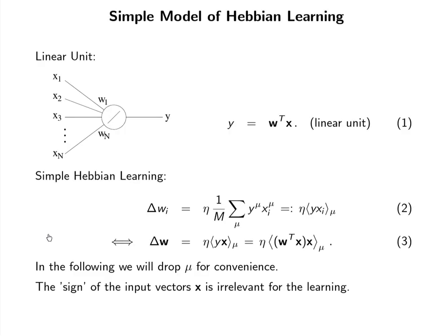Consider a very simple neural model, namely a linear model. X1 to Xn are the inputs to the neuron, W1 to Wn are the weights for these inputs, and we have no non-linearities. We simply sum linearly the inputs weighted by the weights to produce the output Y. This is given by Y equals W transpose X in matrix notation.